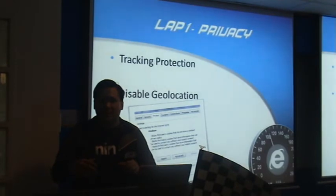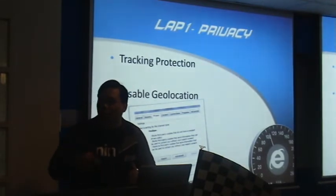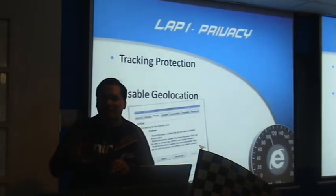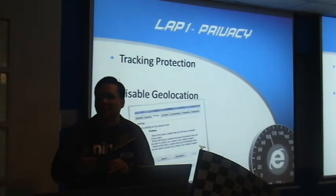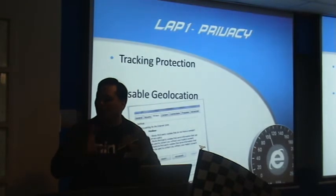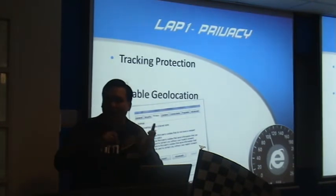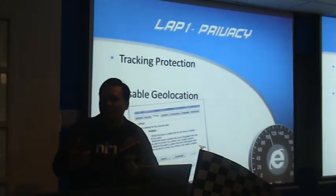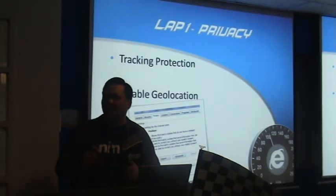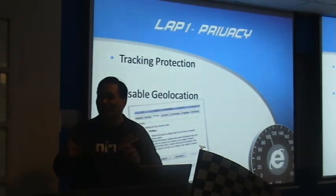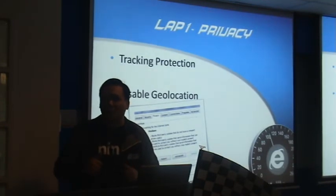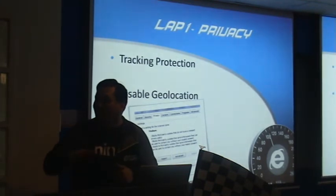This next feature protects you from advertisement sites that track whatever you're doing. For example, if you're browsing a hobby site and you're interested in cars, the advertisements create a profile of you. When you go to another website, you'll notice all the ads are also about cars. Many people, especially in the United States, consider this an invasion of privacy. You can prevent this by going to Safety and then Tracking Protection.